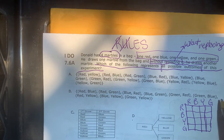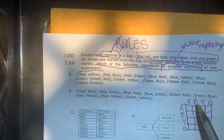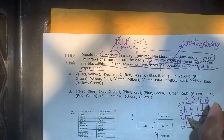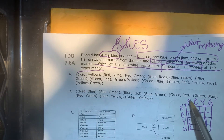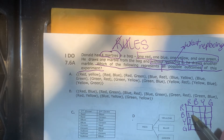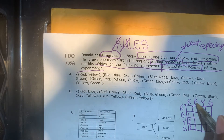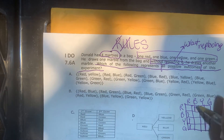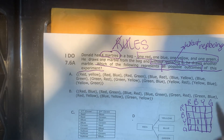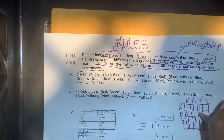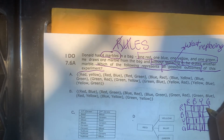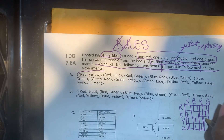There are four marbles. If he draws a red marble first, then the second draw could be blue, yellow, or green — because once you draw the red marble you can't draw it again. If he draws blue first, the second draw could be red or green — you can't draw blue twice. If yellow is first, you can draw red, blue, or green. If green is drawn first, you can draw red, blue, or yellow.